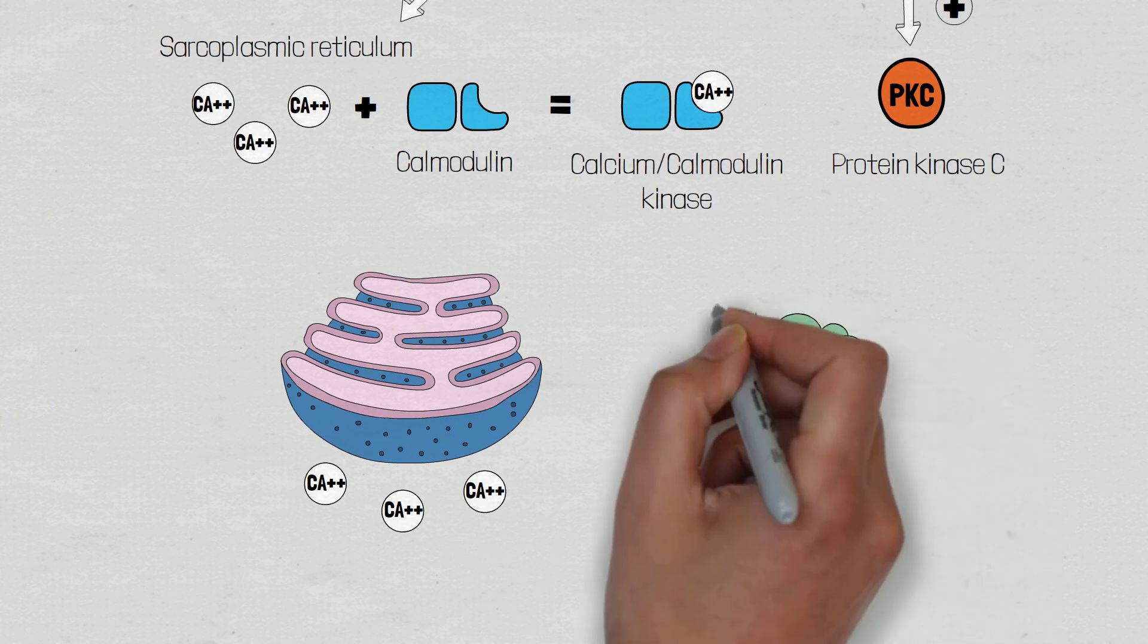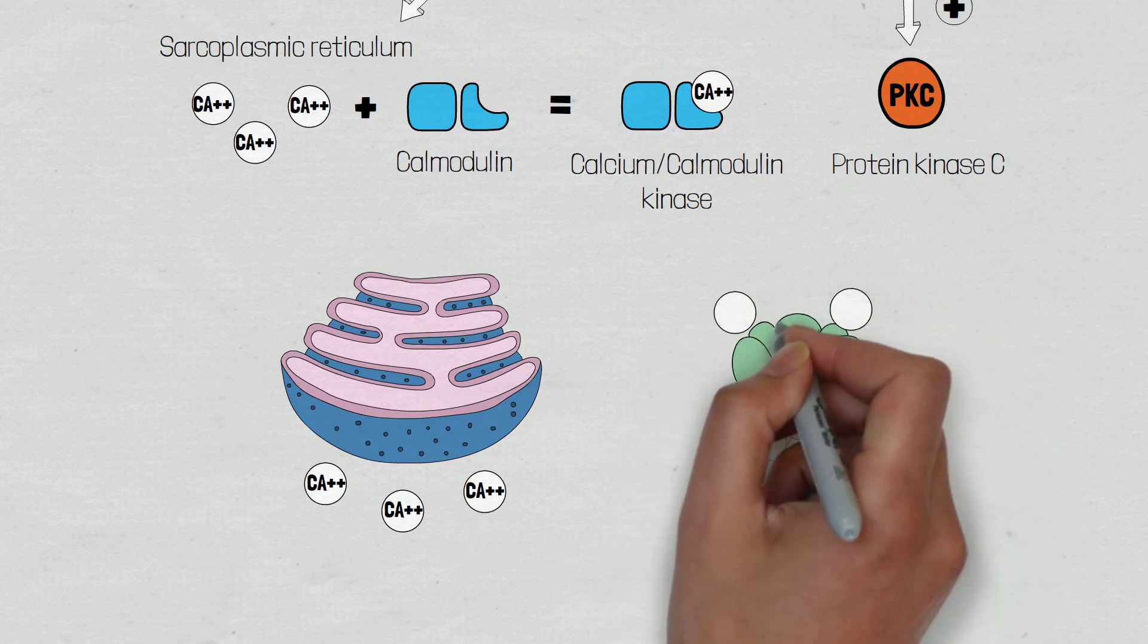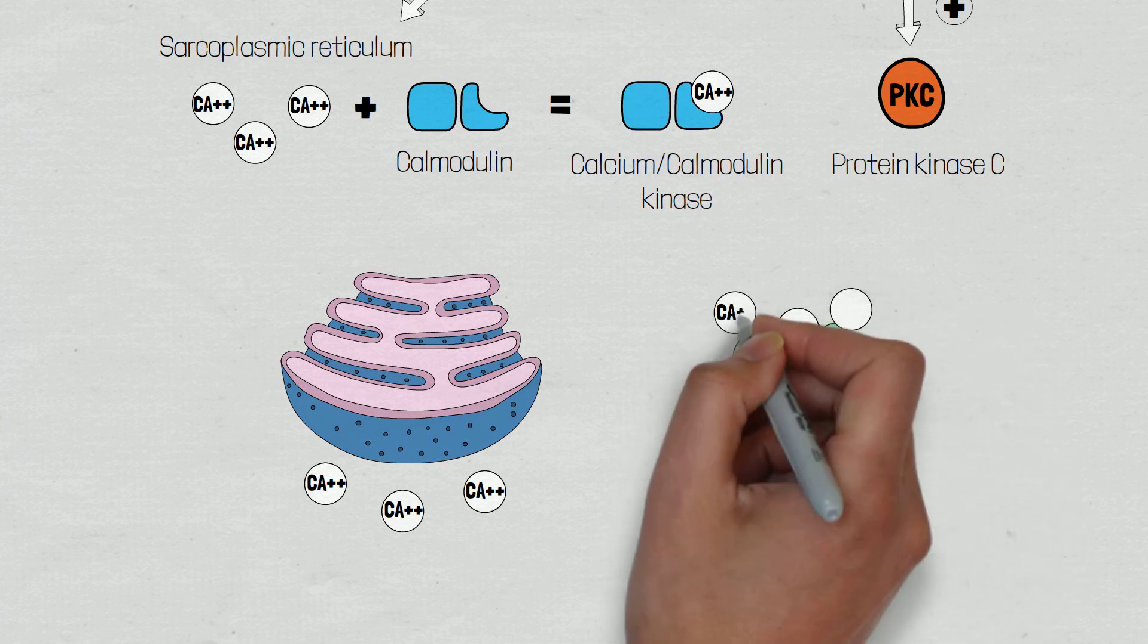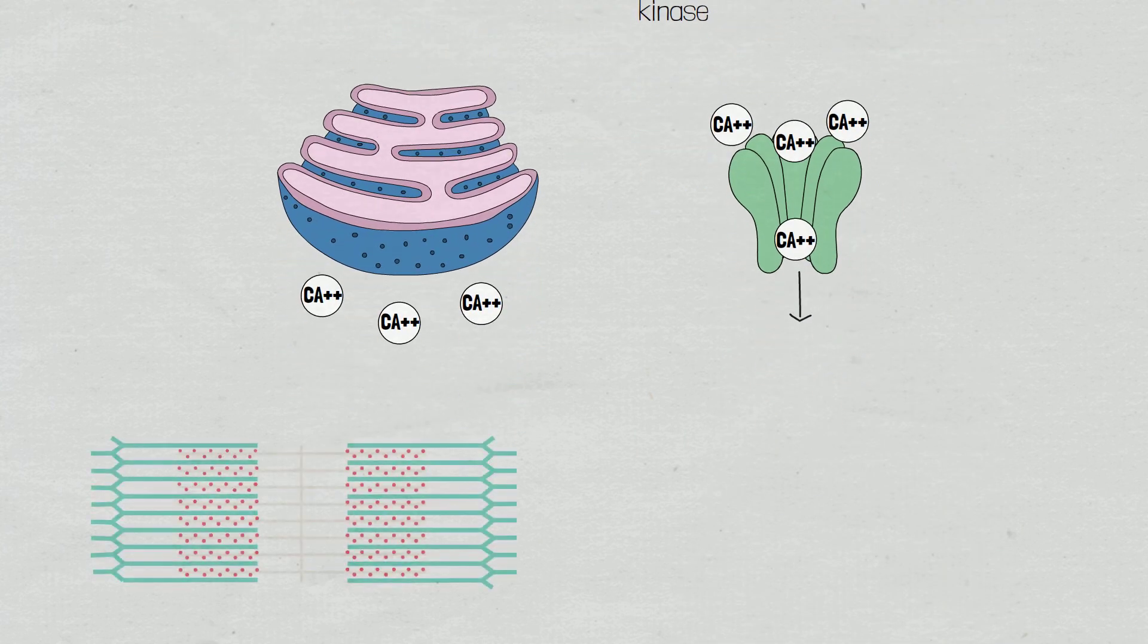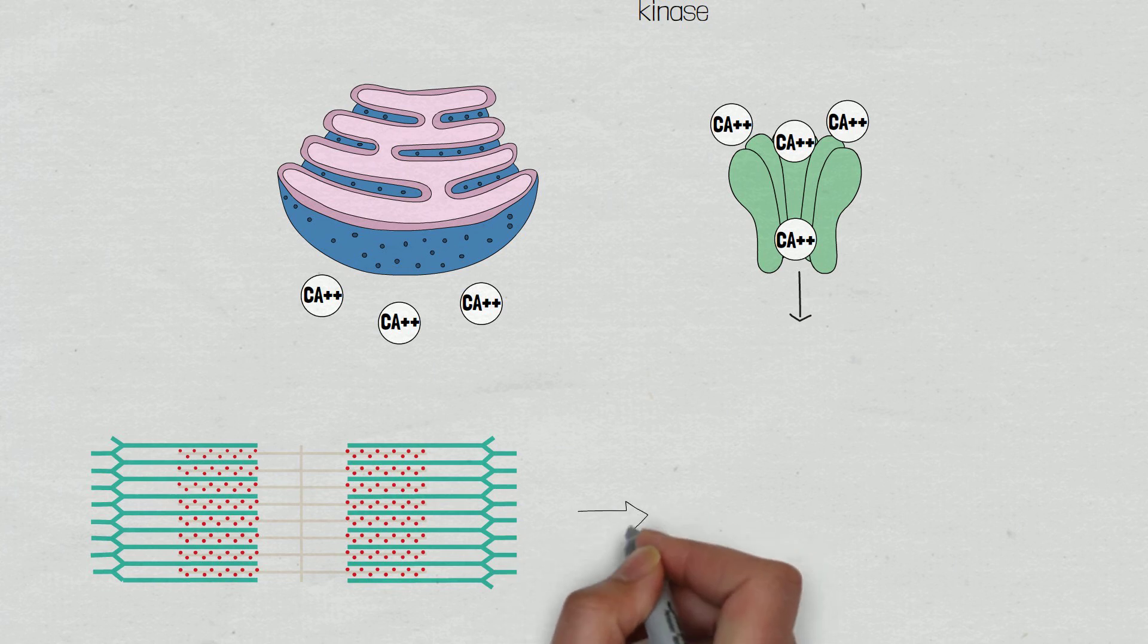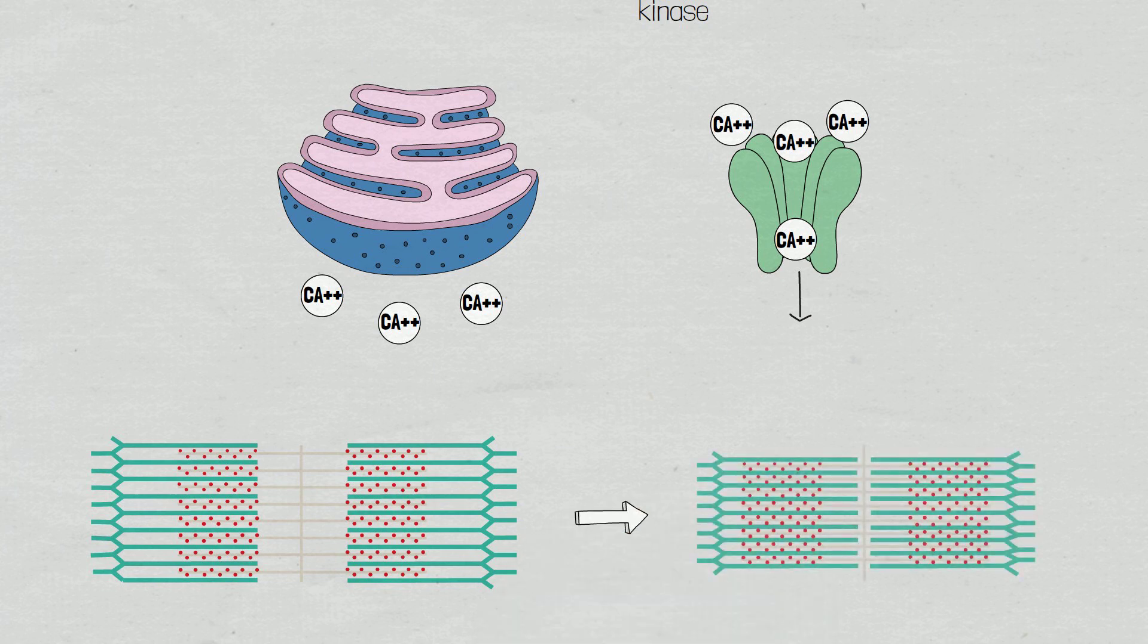This will increase the activity of the myosin light chain kinase and therefore cross-bridge formation of actin and myosin, leading to smooth muscle contraction.